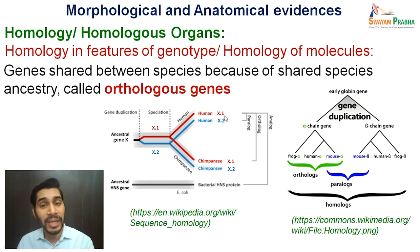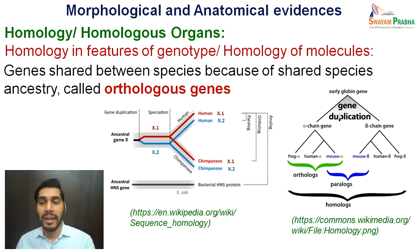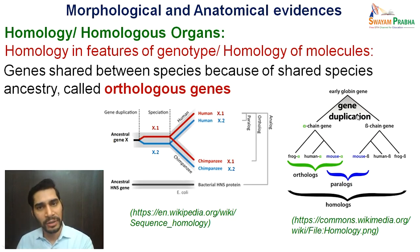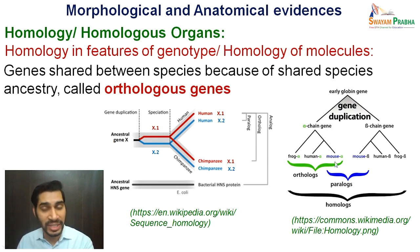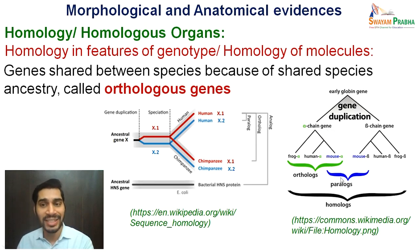If you compare human X.1 with another organism's genes, say bacterial proteins, they present analogous structures or organs. An example is the globin gene family: an early globin gene underwent gene duplication forming alpha and beta genes. The alpha gene, after speciation, is present in different species like frog, human, and mouse — this is called orthologous. If you compare mouse alpha gene with the beta gene of mouse — same organism but duplicated genes — this is called paralogous. All of them together are called homologous genes.